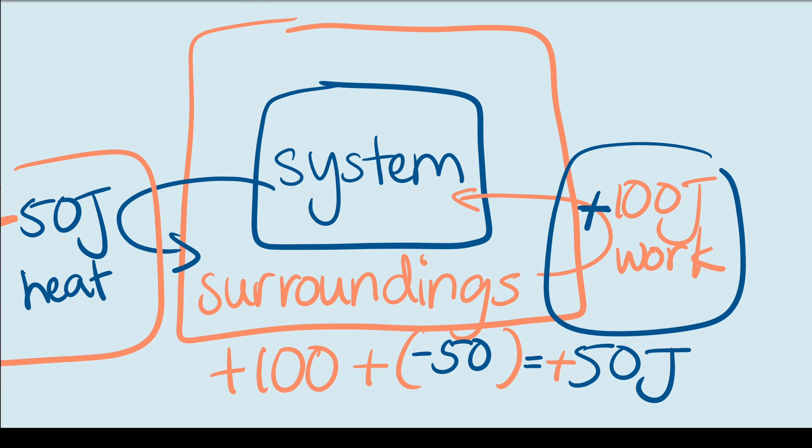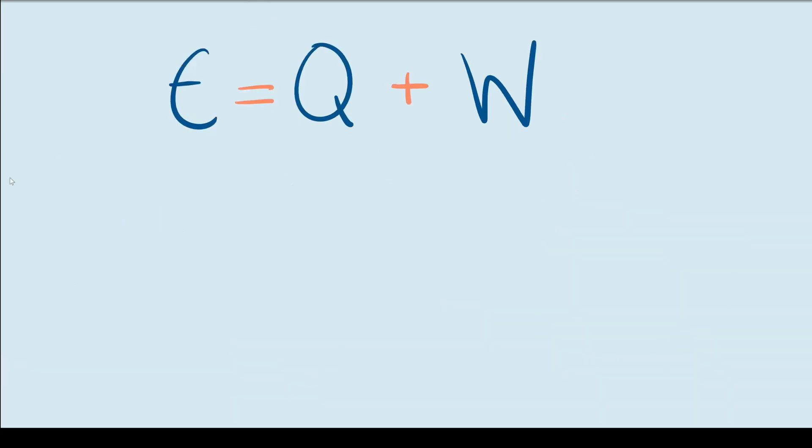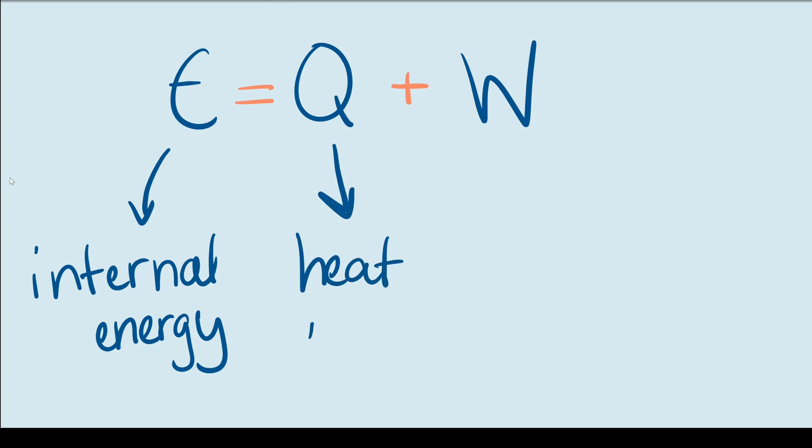You could represent this with an equation. Here E represents the internal energy of the system. It's equal to the sum of Q plus W. In this case Q is the heat that's gained by the system and W is the work done on the system.